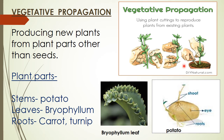Some plants can be produced by artificial vegetative propagation, which means using plant cuttings to reproduce plants from existing plants. For example, rose and sugar cane can be grown by stem cuttings.